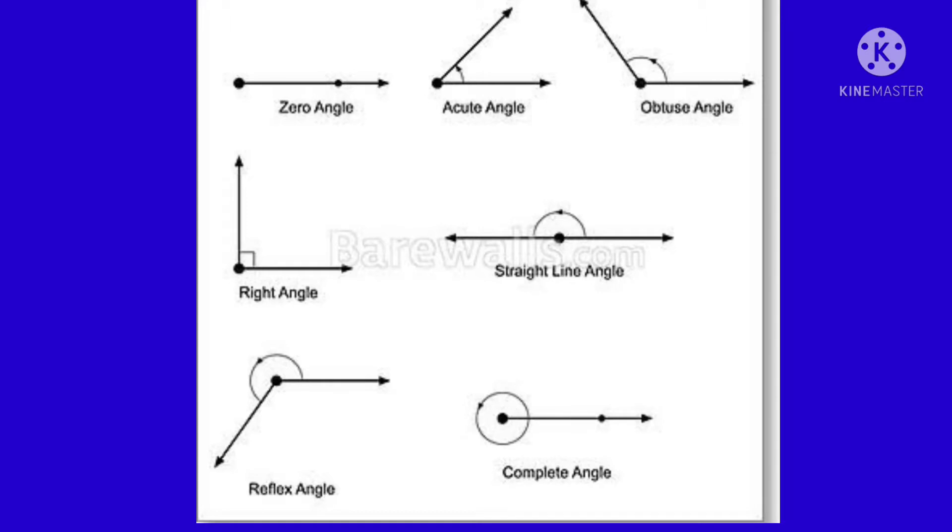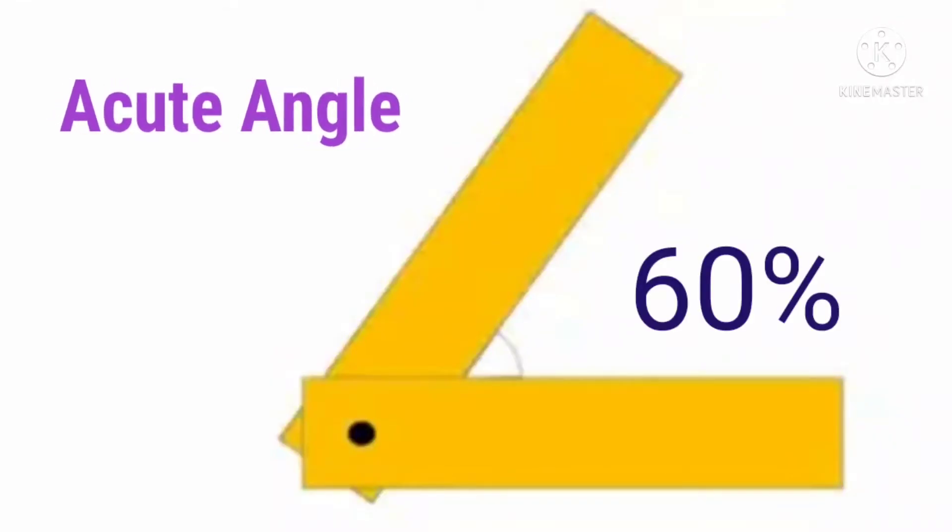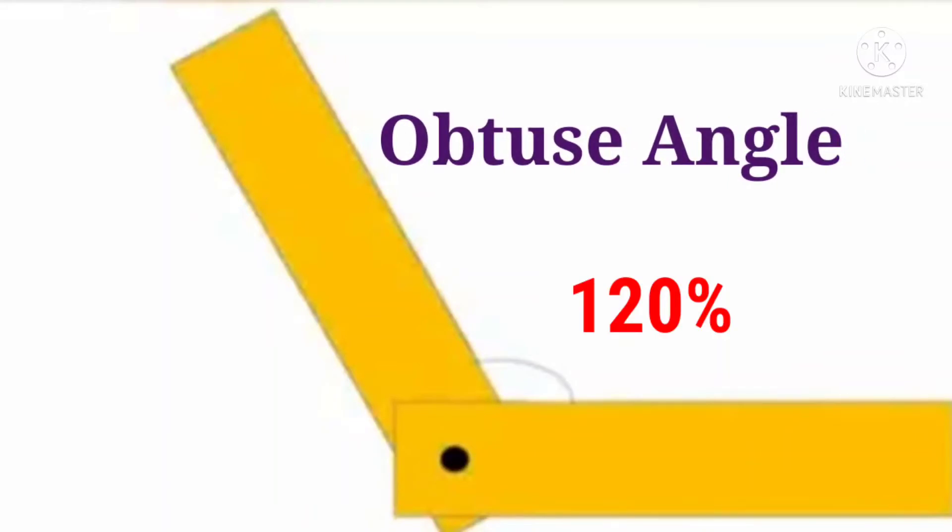First one is acute angle, it means kurung honam, it is 60 degrees. And then next one is obtuse angle, viri honam, it is 120 degrees.